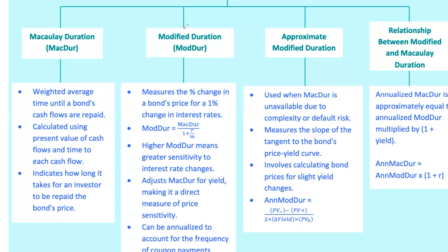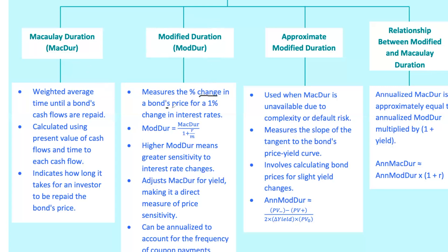Now let's take things up a notch with modified duration. This is the big one when it comes to understanding a bond's sensitivity to interest rate changes. Unlike Macaulay duration, modified duration tells you the percentage change in a bond's price for a 1% change in interest rates. It's more direct and actionable, especially when you're making investment decisions.